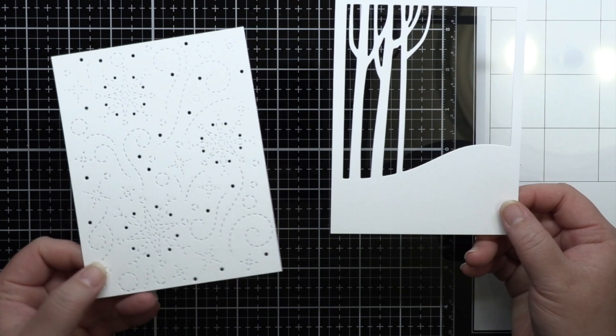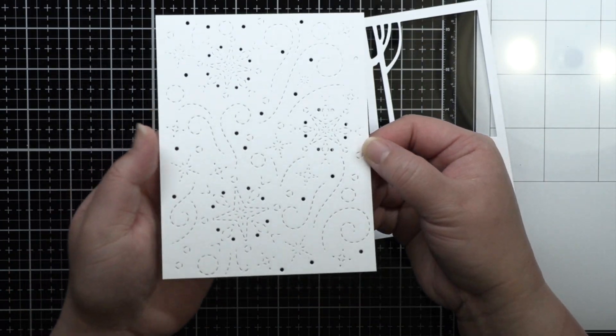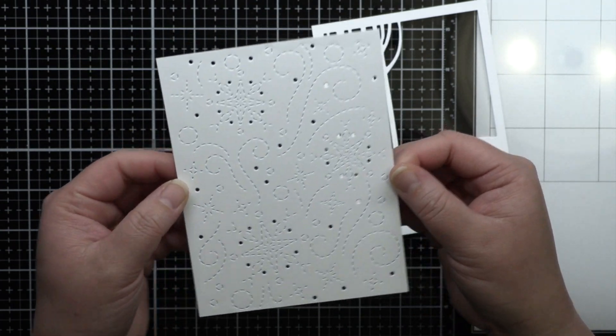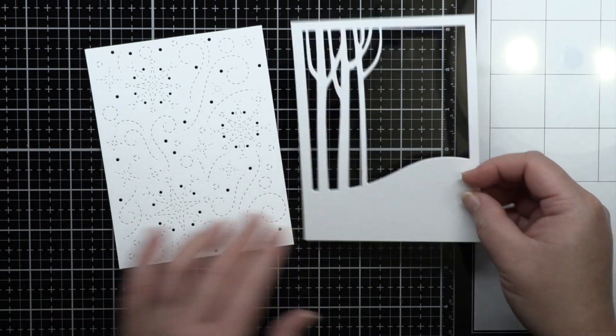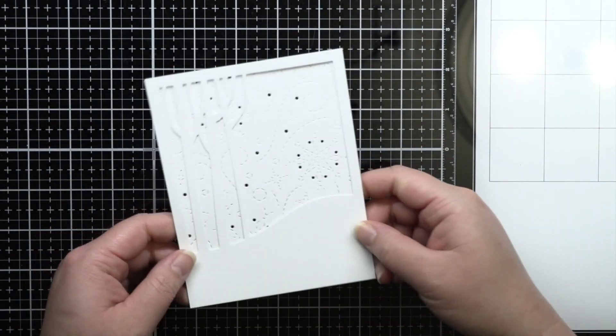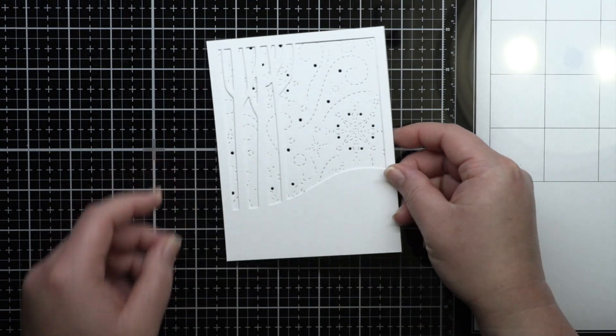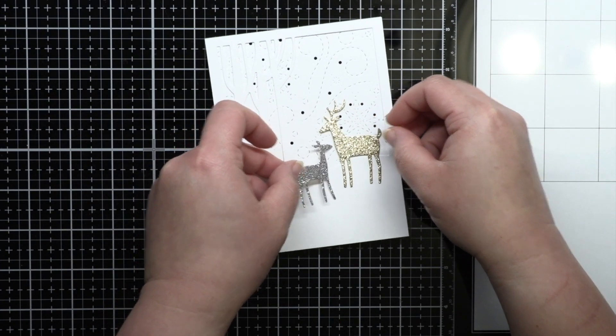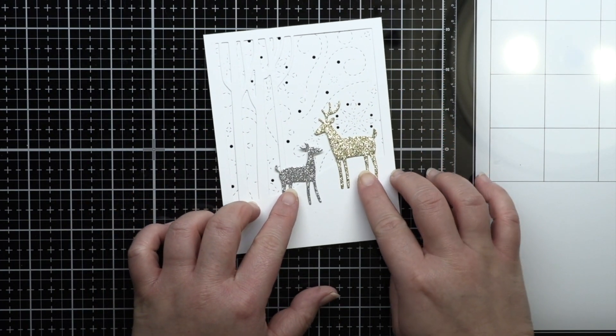My first card literally took me 4 minutes and 45 seconds to create and the bulk of that time was actually applying adhesive. This would be an elegant Christmas card that you could easily mass-produce with a big die-cutting session. I die-cut both cover plate dies with white cardstock for a monochrome design. Then I die-cut the deer couple from gold and silver glitter cardstock for a little bit of sparkle.